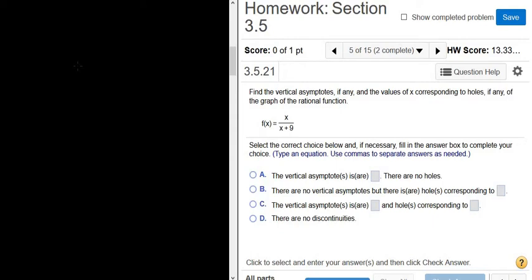Find the vertical asymptotes, if any, and the values of x corresponding to holes, if any. So we have a function and we're looking for all holes and vertical asymptotes. It's x over x plus 9.